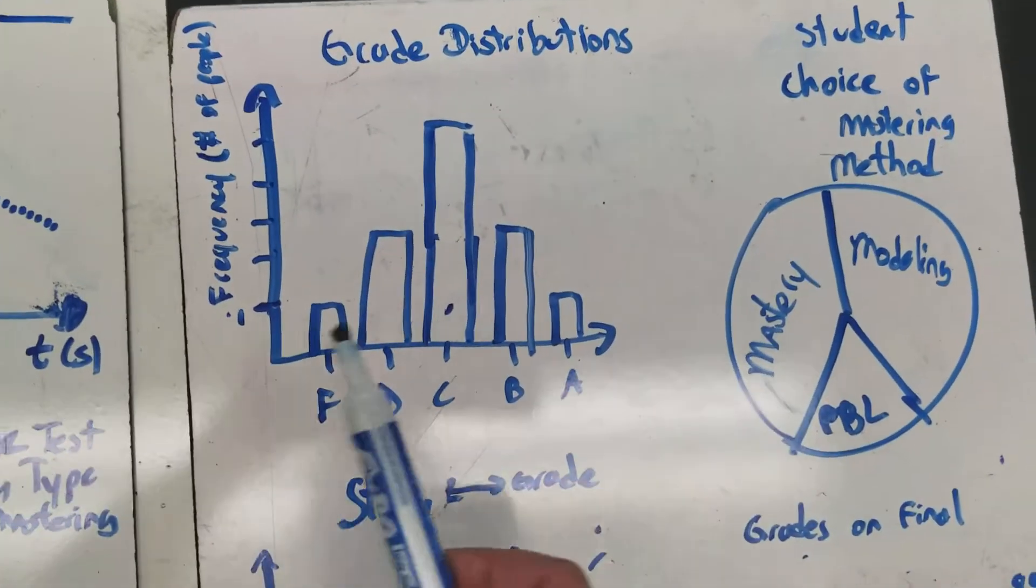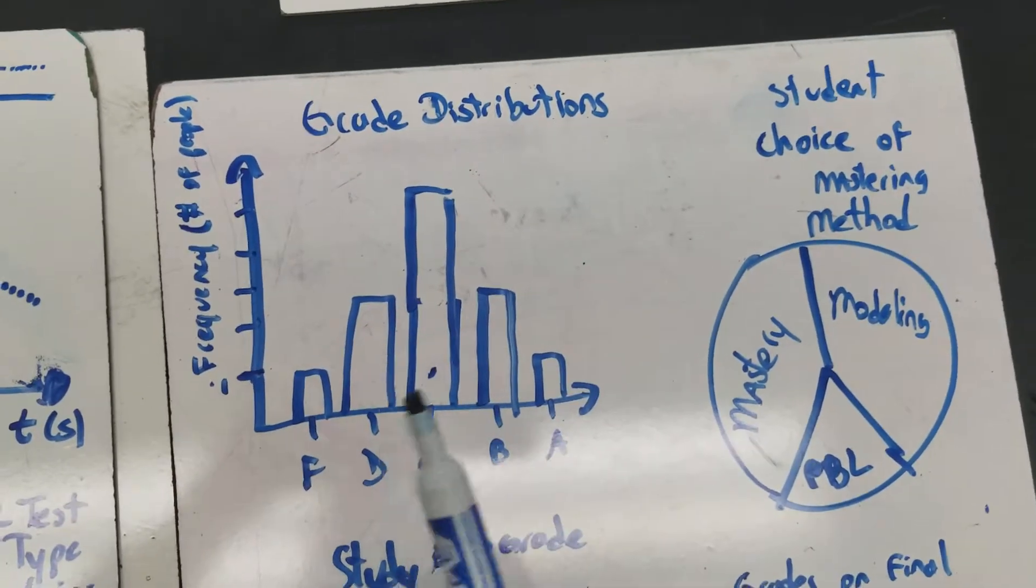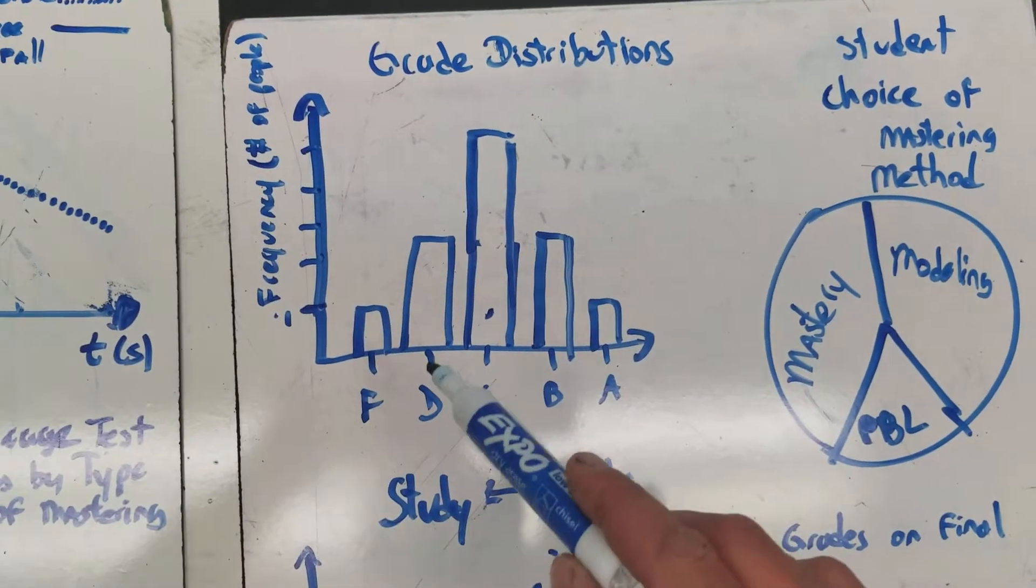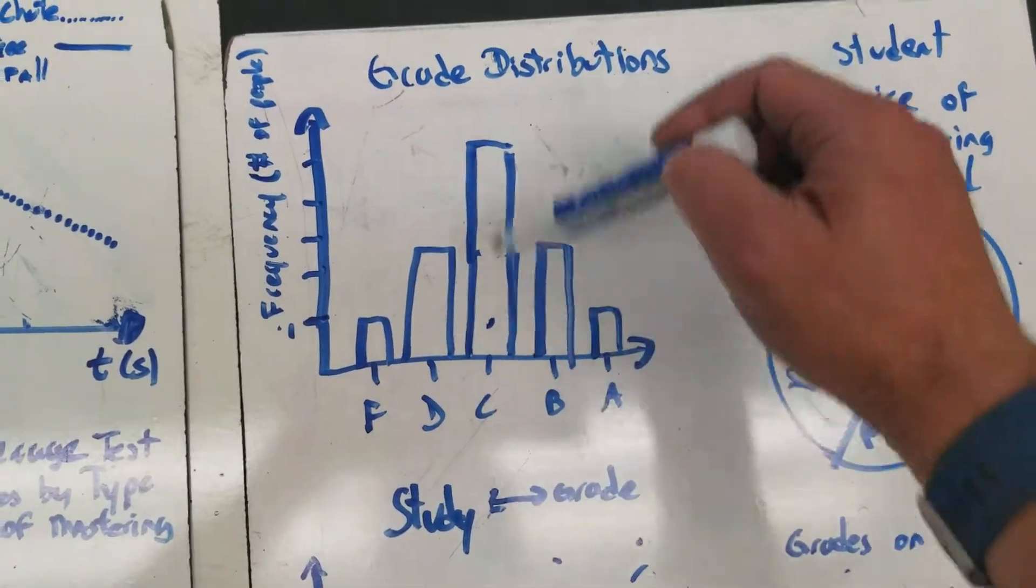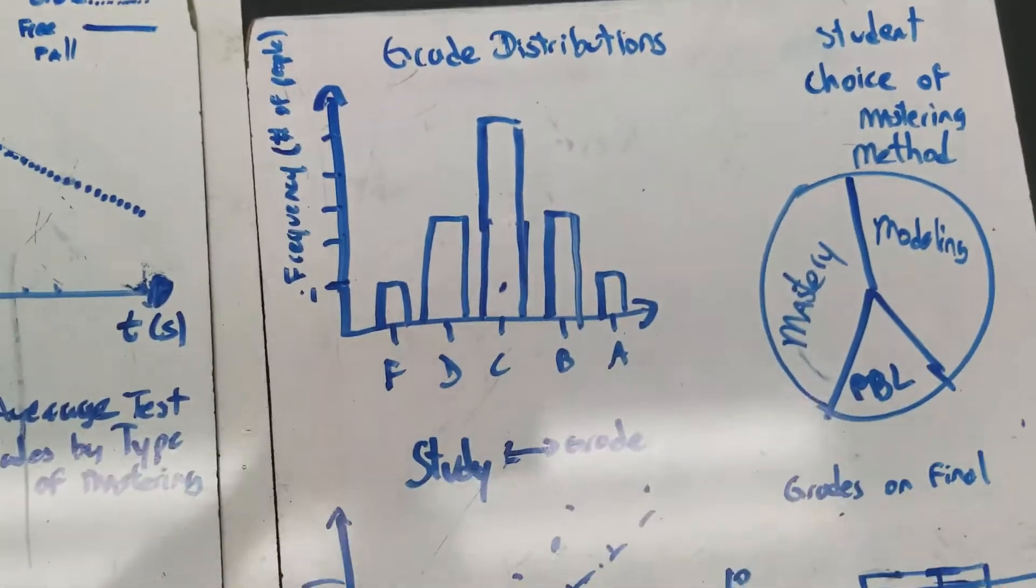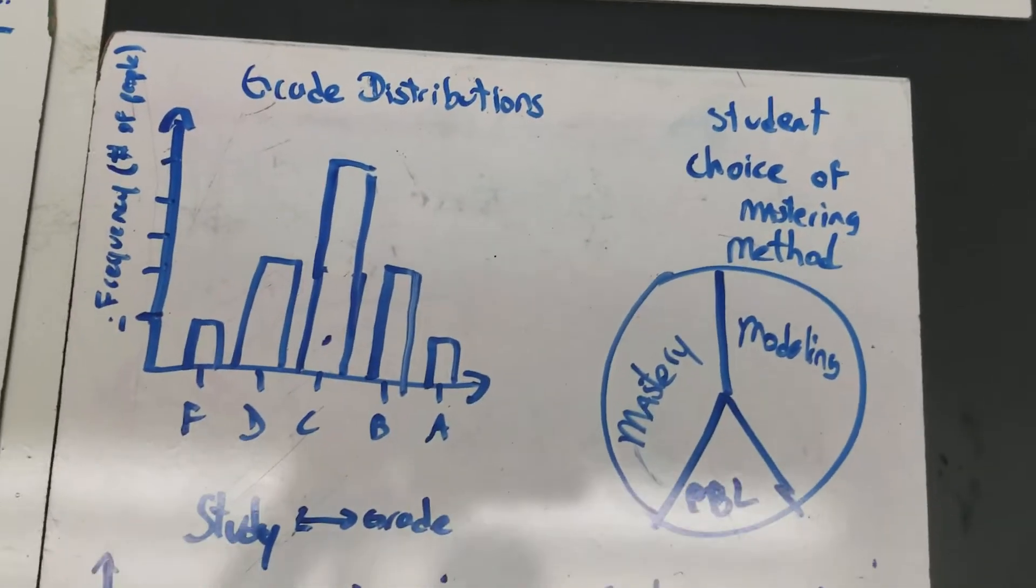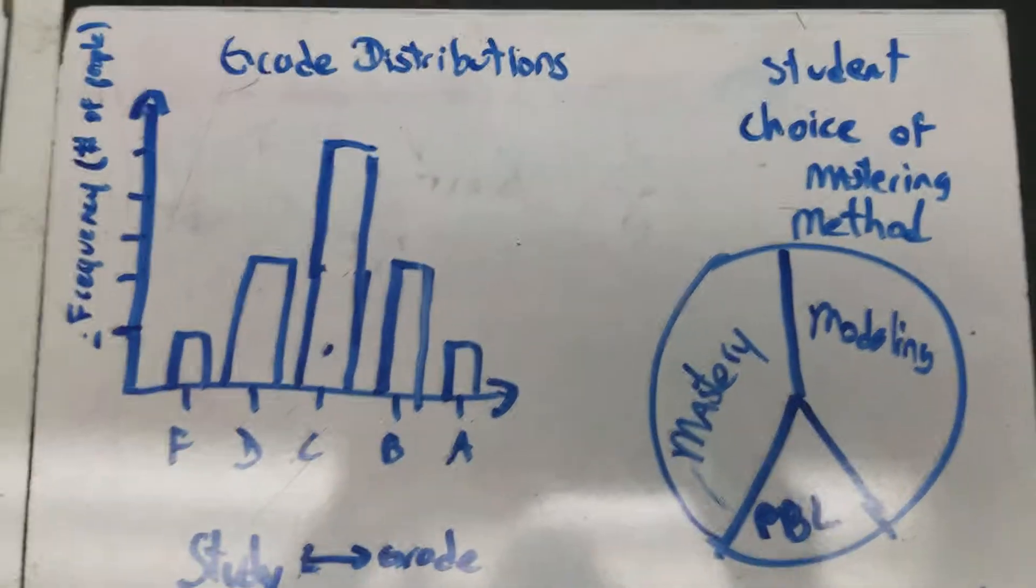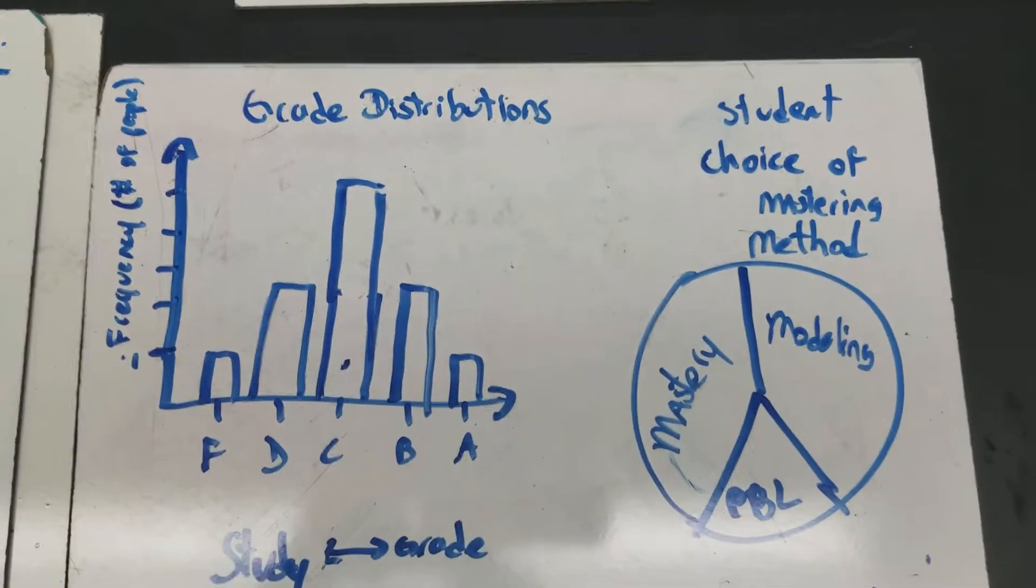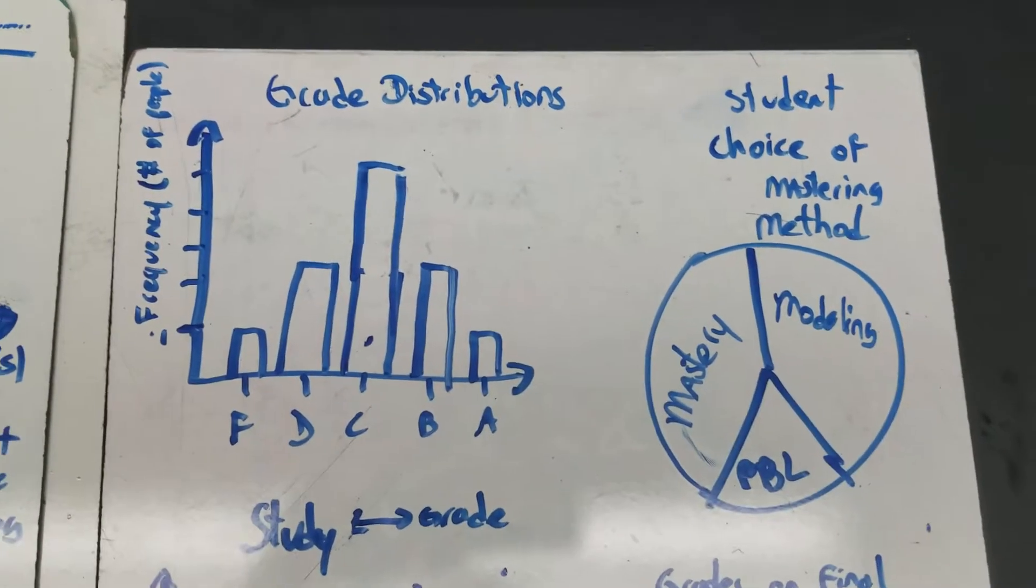You could also use what looks kind of like a bar graph to show the distribution of grades. This would be like a normal curve, little As, little Fs, a little bit more Ds and Bs, and lots of Cs. That's usually what happens with a population if you collect large numbers of data. So pie graphs and pie charts can also be used to represent the distribution of data.